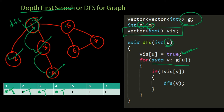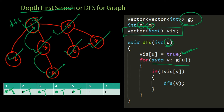Then we look at the next unvisited child of 1, which is 5. We perform a DFS from 5 — 5 is marked as visited, then similarly 6 and 7 are visited. The whole algorithm repeats itself, giving us a recursive-based implementation for depth first search.